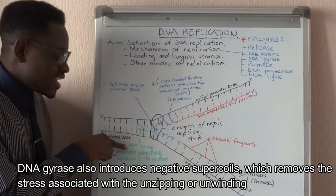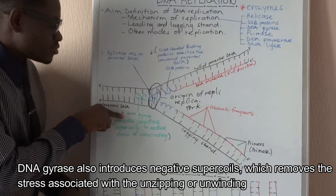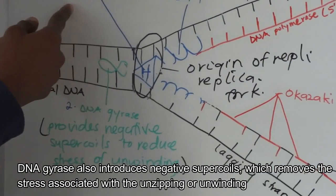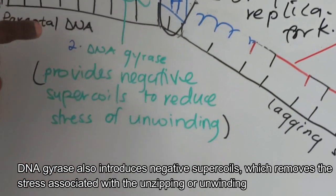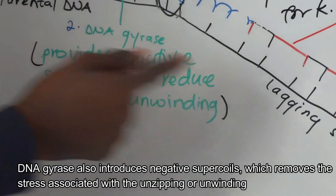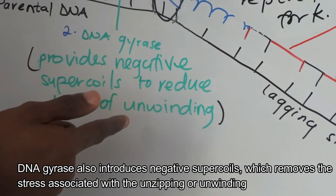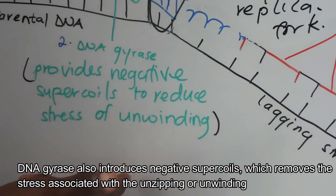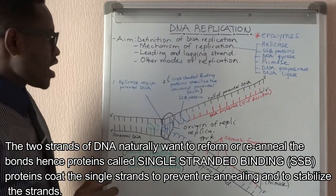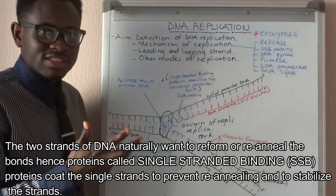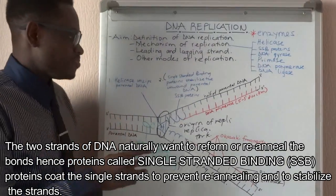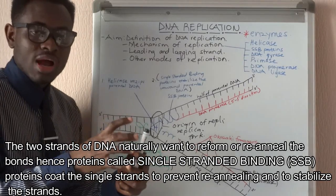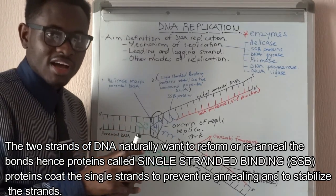DNA gyrase also comes in to help helicase function more effectively. It does this by introducing negative supercoils to reduce the stress of unwinding. Naturally, the DNA strands tend to come back together — we call this reannealing.